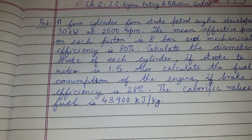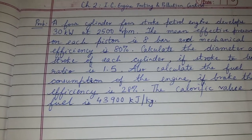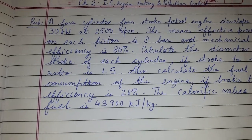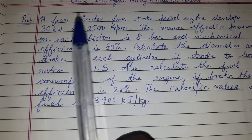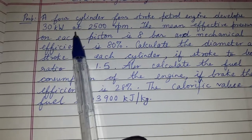Today's topic of discussion is a problem related to chapter number two, IC engine testing and pollution control. A four-cylinder four-stroke petrol engine develops 30 kilowatts at 2500 rpm.